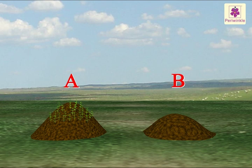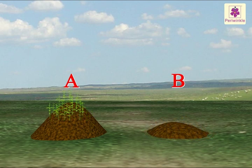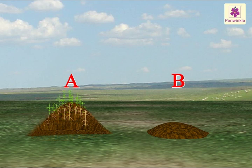After a week of watering mound B, it diminishes due to soil erosion. Thus, plants prevent soil erosion.